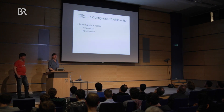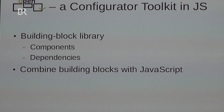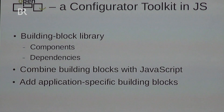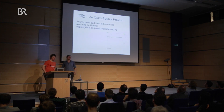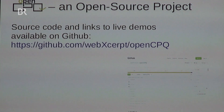OpenCPQ is a library providing the building blocks. You are supposed to combine these blocks with JavaScript, and you can even add your own building blocks. We made OpenCPQ an open source project — the code, live demos, and slides are available on GitHub. When you Google for OpenCPQ you will find it. We have the MIT license, which is very liberal. You are invited to use it, contribute to it, and adapt it as you like.